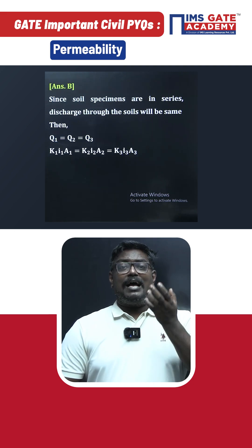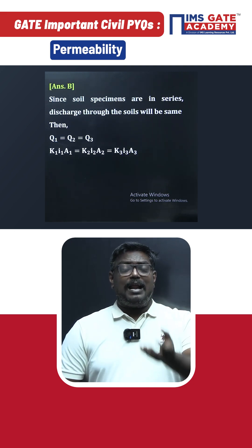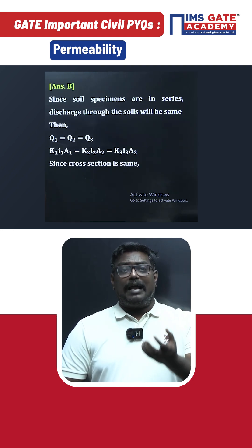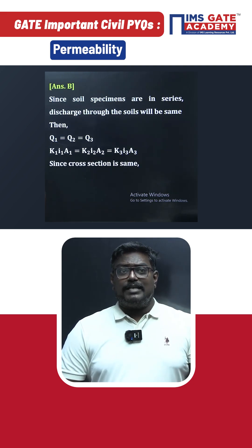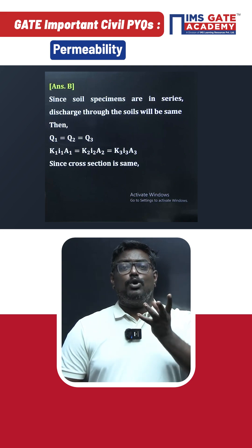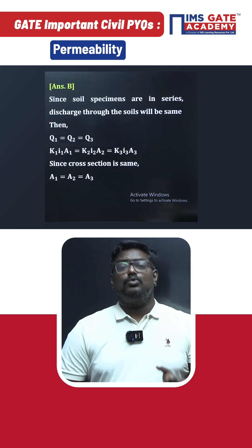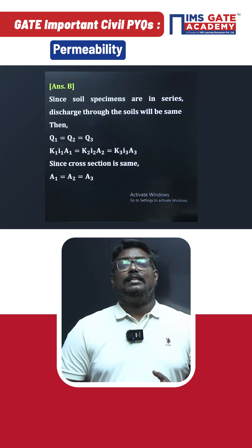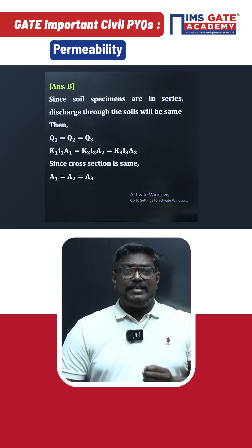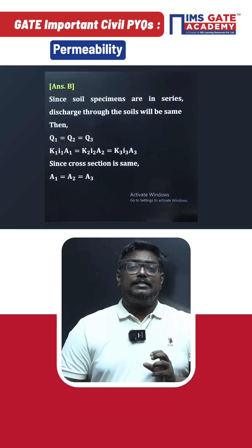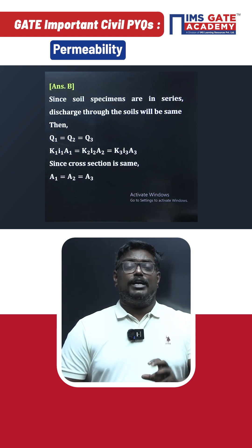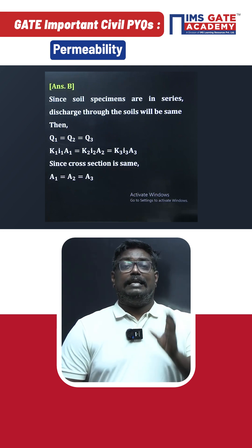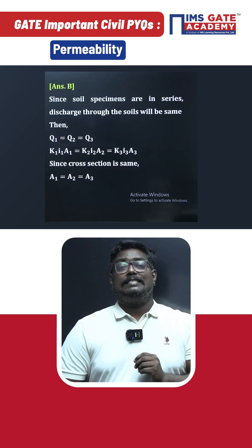As the area, diameter, and length are the same, you can write the equation as h1k1 = h2k2 = h3k3. In this configuration, you should understand that the total loss of head is 560 mm.